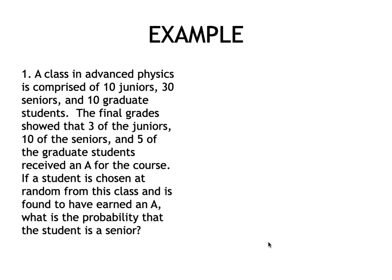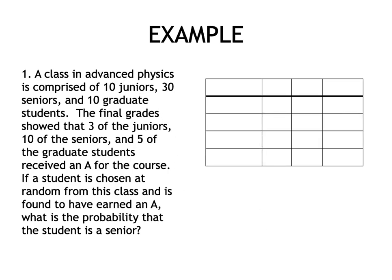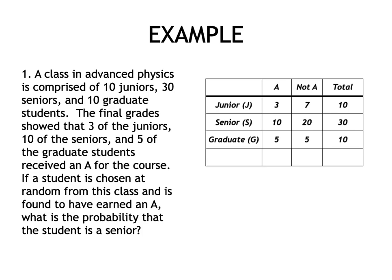Let's organize the data in tabular form. We have students who got an A and those who did not. For juniors (J), 3 got an A and 7 did not, out of a total of 10. For seniors (S), 10 got an A and 20 did not, out of 30. For graduate students, 5 got an A and 5 did not, out of 10. The grand total is 50 students.